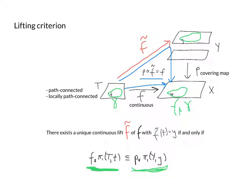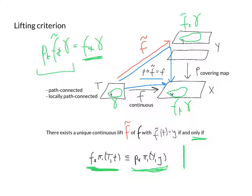Obviously, if there is a lift F̃, we could just take F̃★(γ), because y projects down to x and P ∘ F̃ = F. So P★(F̃★(γ)) = F★(γ), which tells us that for any loop γ, F★ of that loop is contained in the image of P★. So this condition is actually a necessary condition for the lift — we've already proved the only-if statement.